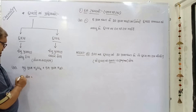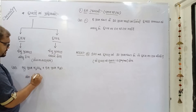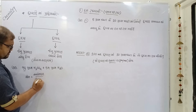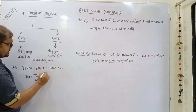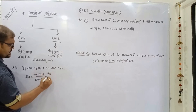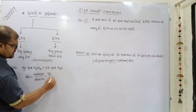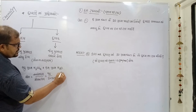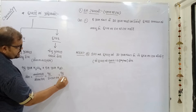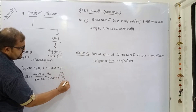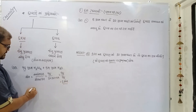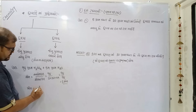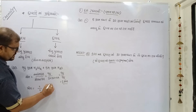H2SO4 ના મોલ કેટલા થશે? આપેલ દળ ના છેદ માં મોલાર દળ. આ ઉદ્યારણ માં ૯૮ ગ્રામ આપેલ છે. H2 + S + O6 = 64. ૯૮ ના છેદ માં ૬૪ — ૫૪ ગ્રામ. H2SO4 ના 2 + 32 + 64 = 98 — એ મોલાર દળ થશે.